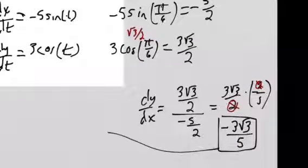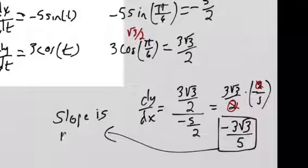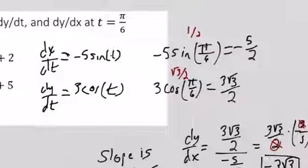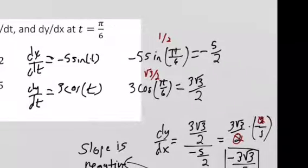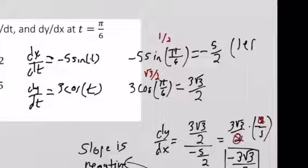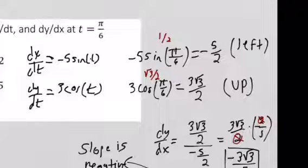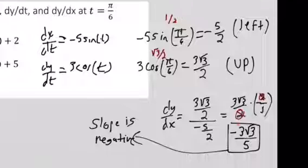So the slope is negative. Now let's talk direction. If dx/dt is negative, that means the movement is to the left. If dy/dt is positive, that means the movement is up. So we're moving positively in the y direction and negatively in the x direction, which gives us an overall negative slope.